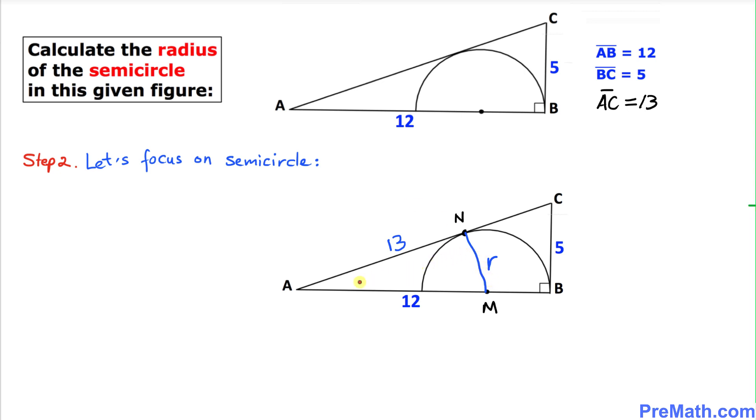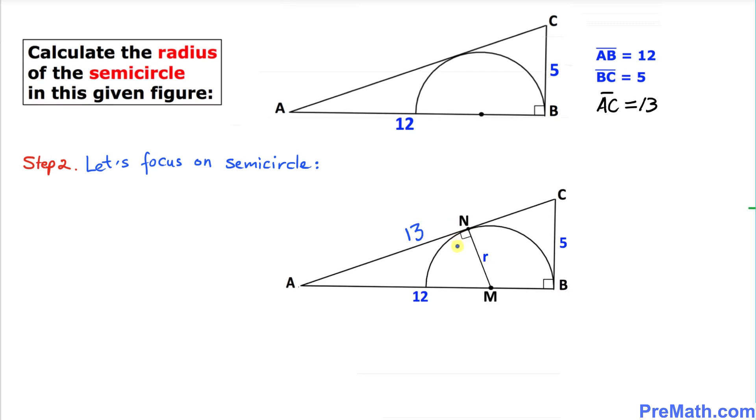We know that this radius R and this tangent line AC are always perpendicular to each other, which means this angle is going to be 90 degrees. Here is a much nicer figure. Now let's focus on this highlighted part.